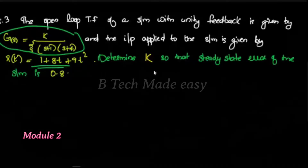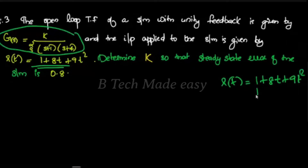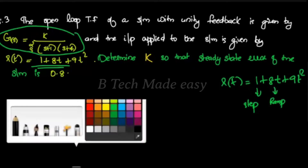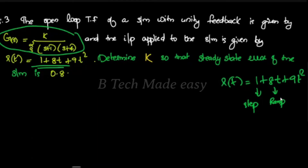The input is a combination of 1 plus 8t plus 9t-squared. This corresponds to step input, this corresponds to ramp, and the last one corresponds to half t-squared, which corresponds to a parabola.